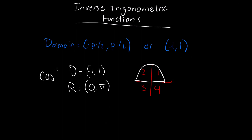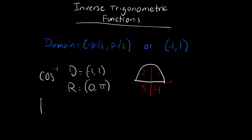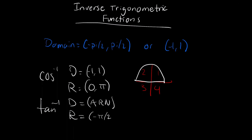For inverse tangent, the domain is all real numbers, and the range is from negative pi over 2 to pi over 2. So in this case, tangent is working through the first and fourth quarters.